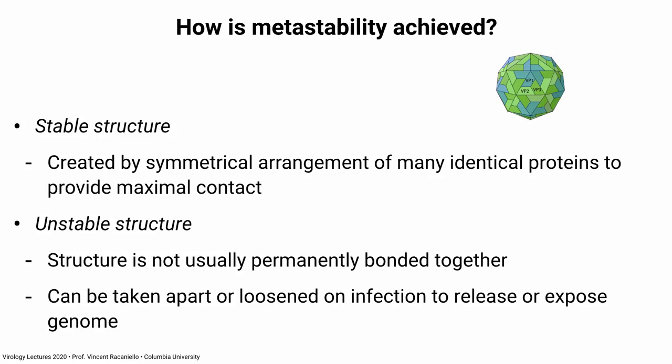So that's metastability. How do you make a particle stable yet unstable? Stability is made by the symmetrical arrangement of identical proteins. Many virus particles are built by taking one or a few proteins and repeating them multiple times — they have maximal interaction with each other, giving the particle stability. How can it be unstable at the same time? These proteins are not covalently joined — in most cases they are non-covalently joined — so they can be loosened upon infection when the right trigger is provided. In the absence of the trigger, the virus remains stable because of all these interactions. Under the right conditions, the stability is reversed.